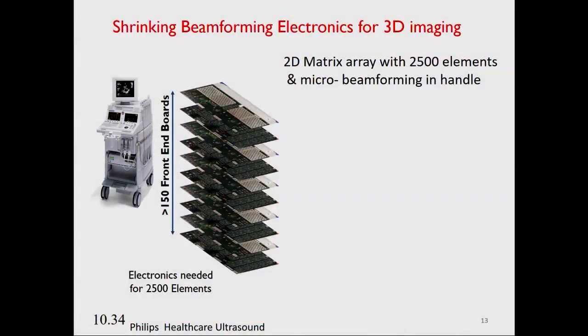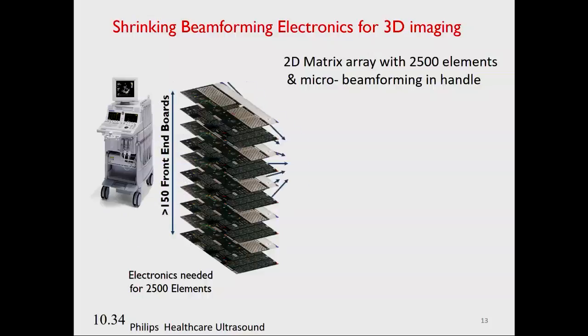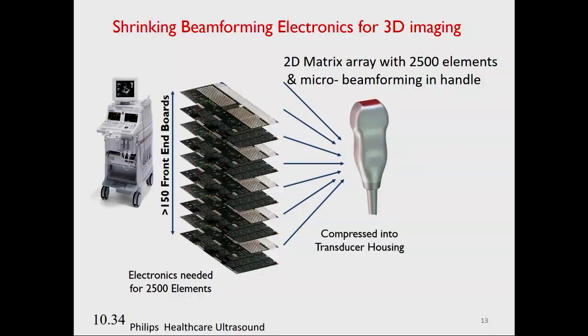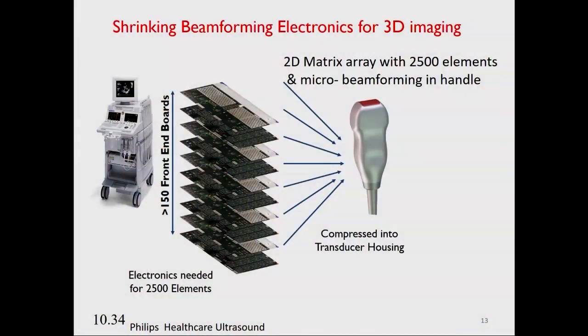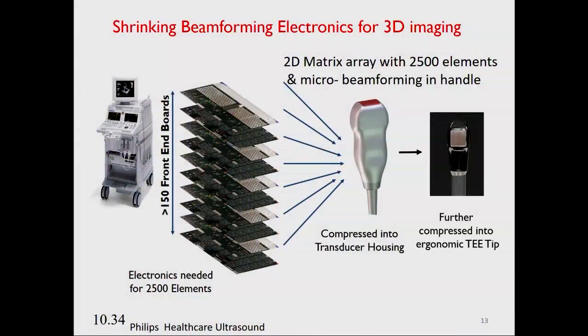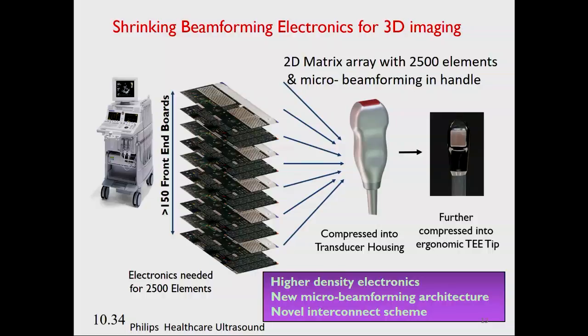At Philips Ultrasound, an engineer who worked in my group at Hewlett-Packard came up with a solution. Instead of having a huge unwieldy system, he condensed everything into the handle of the transducer by inventing a concept called microbeamforming, which does some preprocessing. There are 2,500 elements in that matrix array, and a newer one — shown to scale — has over 7,000 elements, with the count up to about 9,600. The technologies enabling this are Moore's Law, the continuing reduction of electronic size, microbeamforming, and a novel interconnect scheme for all those elements.